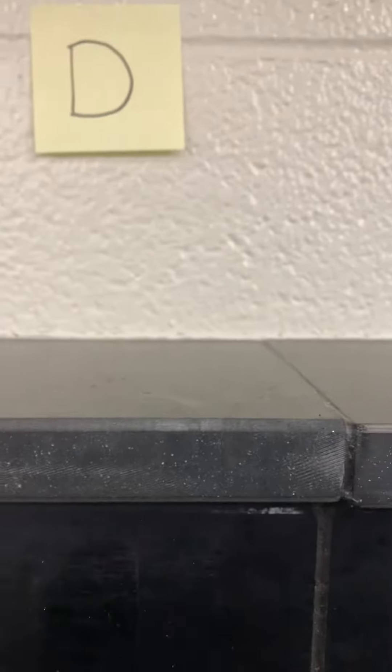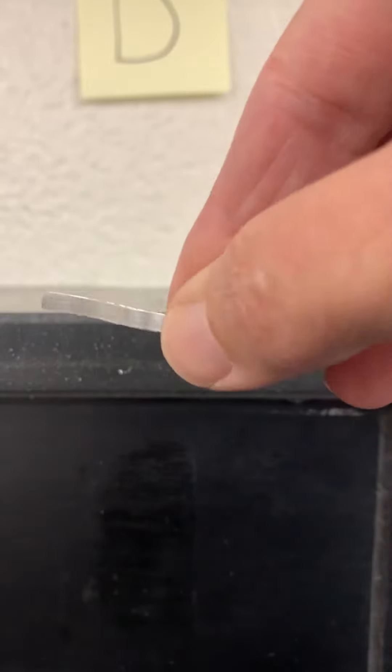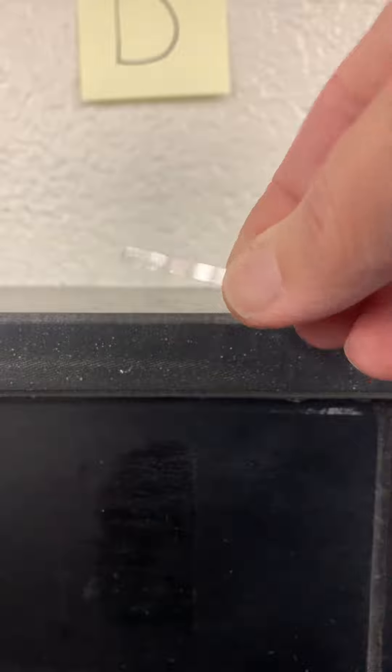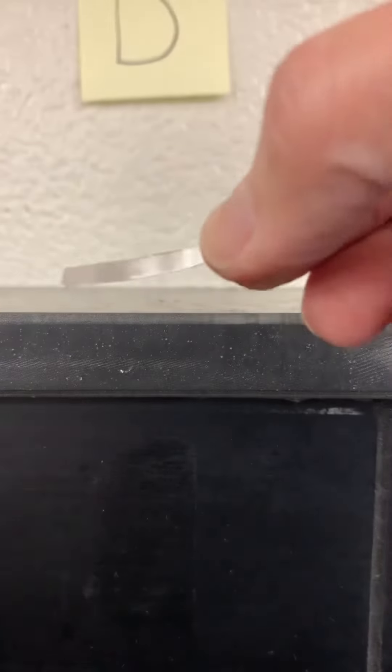This is investigation D. Investigation D involves some magnesium ribbon I have here. You can see the color, what it looks like. You can see it bends very easily. It's kind of a flat form right now.